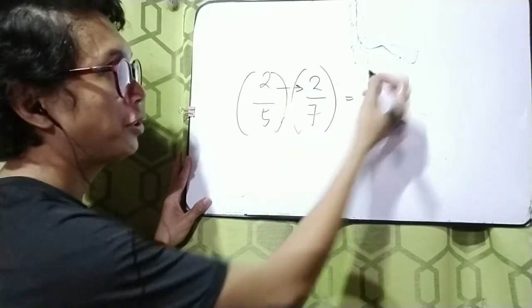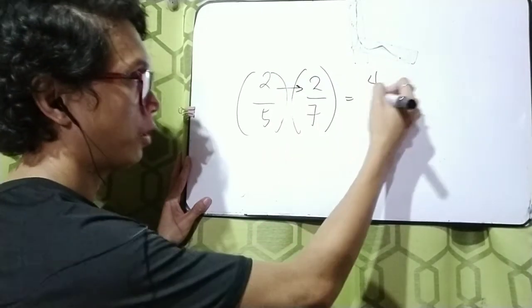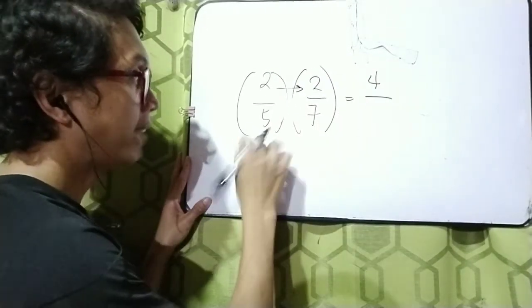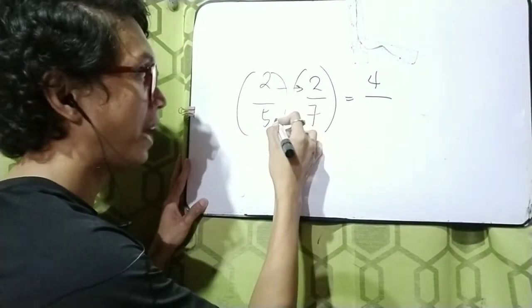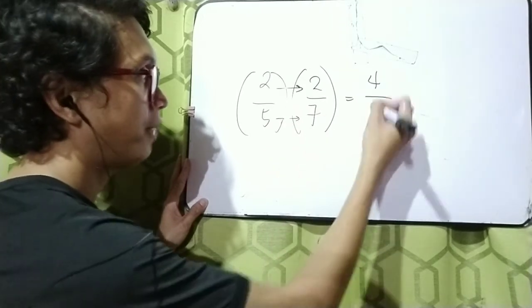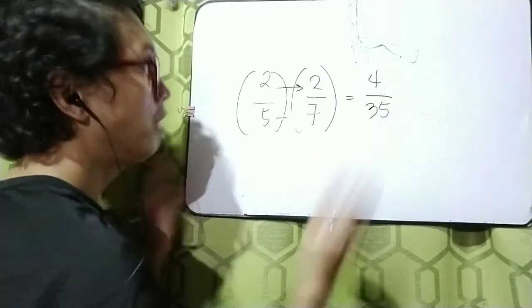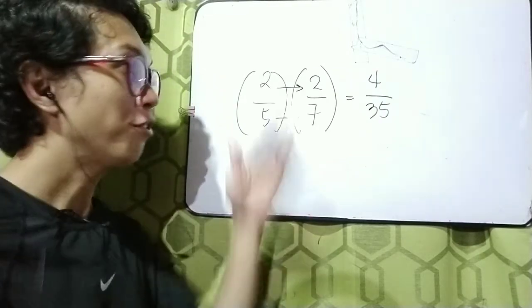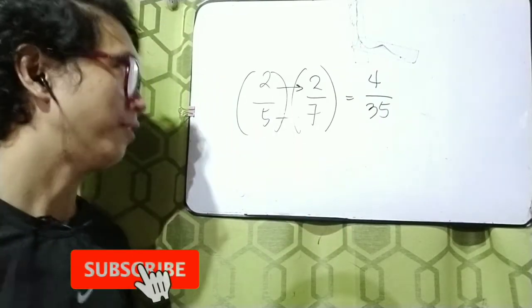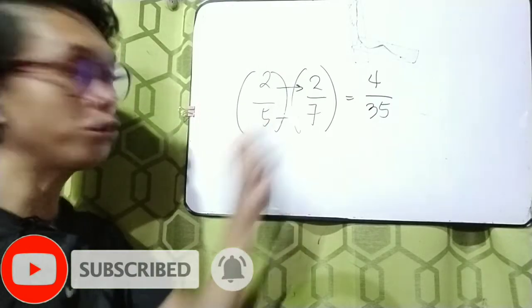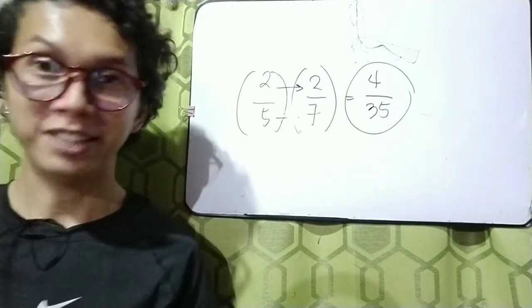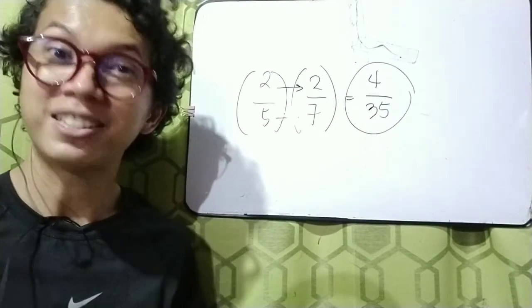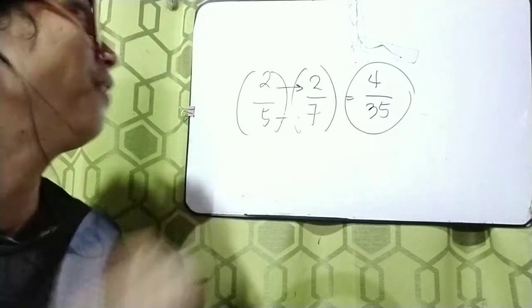So 2 times 2, that is 4. Next, we multiply the denominator to the other denominator, so 5 times 7 is 35. The result is 4 over 35. So 2 over 5 times 2 over 7 equals 4 over 35. That's very easy, right? So let's have another problem.